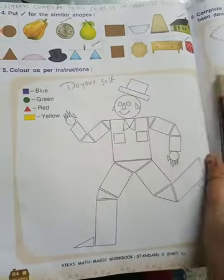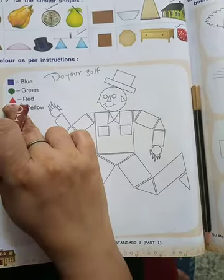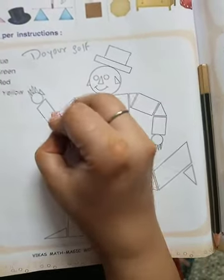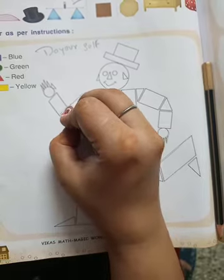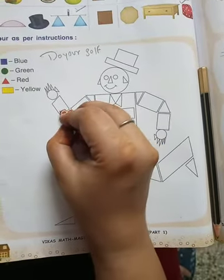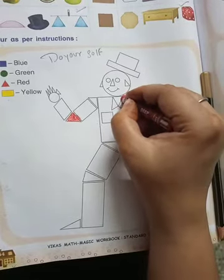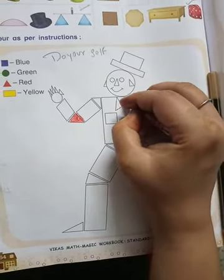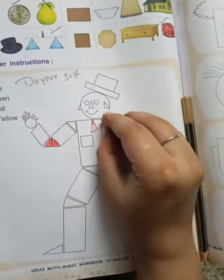Here we have to color. This triangle is red color so we have here triangle. We have to do red color. We have to do red color. We will do red color. We have to complete red color.